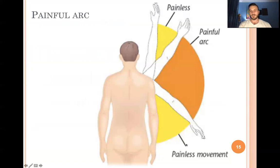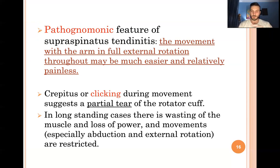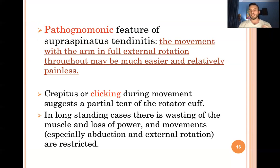A pathognomonic feature of supraspinatus tendinitis is that movement with the arm in full external rotation may be much easier, since external rotation provides more space in the subacromion space and reduces pain. Crepitus or clicking may be present if there is a partial tear in the tendon. In long-standing cases, muscle wasting may be observed due to chronic pain and disuse.